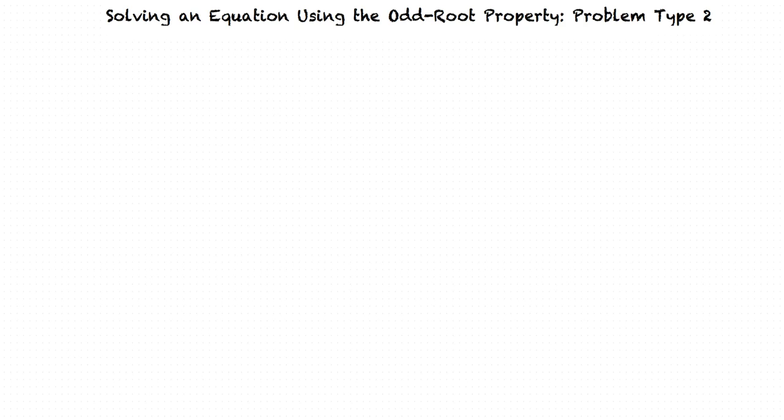I've heard of the square root property, but what is the odd root property? The odd root property allows us to solve for a variable raised to an odd exponent. Let's take a look at this in the context of an example problem.